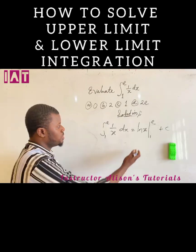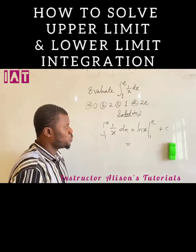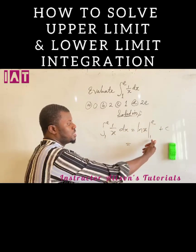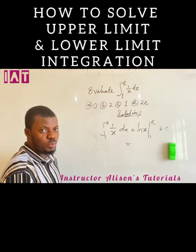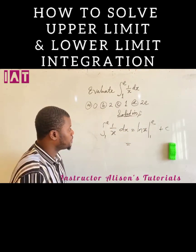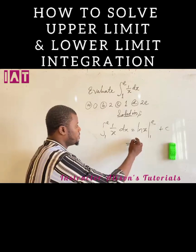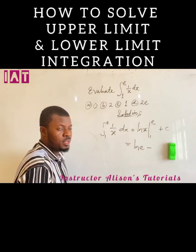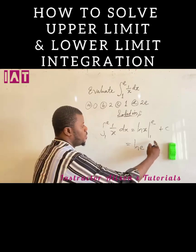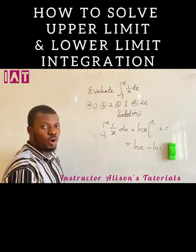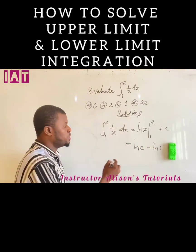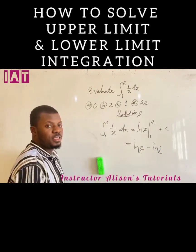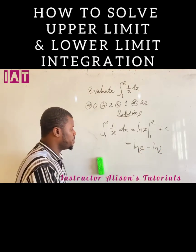At this point, we are going to subtract by substituting e and 1 into x. That means we have the natural log of e minus the natural log of 1, and all of this will be to the base of e.